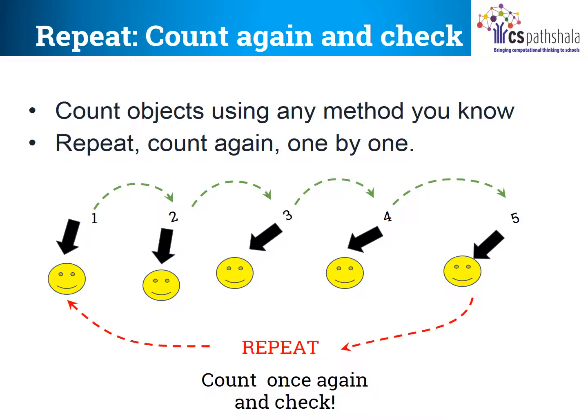Let's see the last method — repeat, count again, check. You can count objects using any method you know, and then count again one by one. Follow the arrow: 1, 2, 3, 4, 5. And then repeat once again: 1, 2, 3, 4, 5. Yes, we are correct.